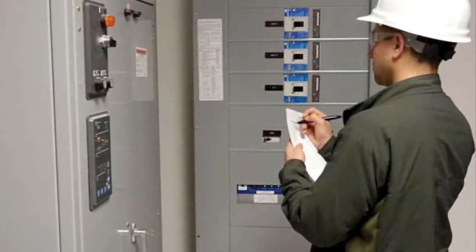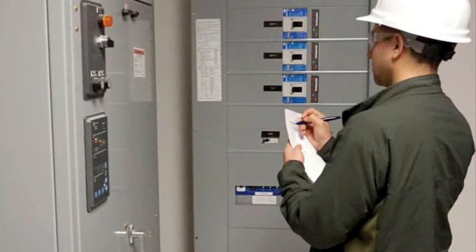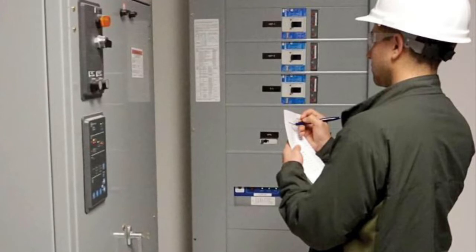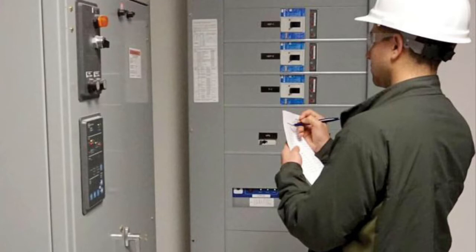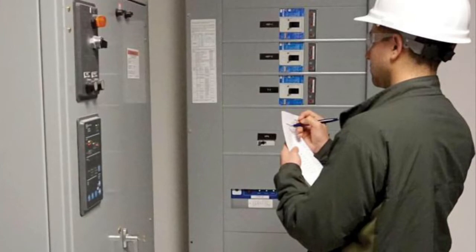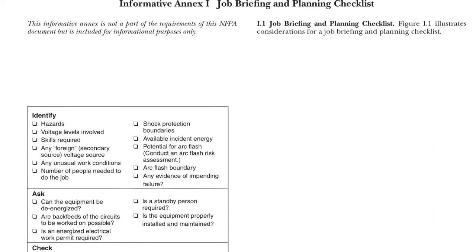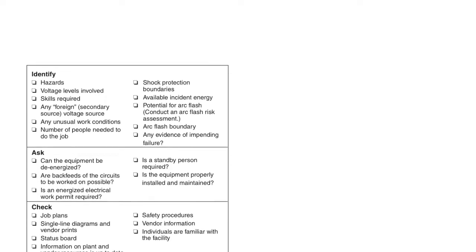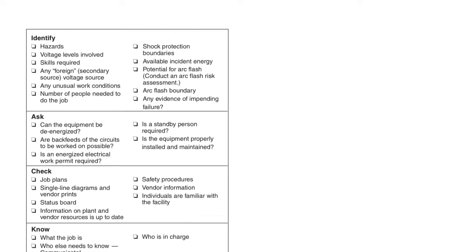Before starting each job that involves exposure to electrical hazards, the employee in charge shall complete a job safety plan and conduct a job briefing with the employees involved. The job safety plan shall be completed by a qualified person, be documented, include a description of the job and individual tasks, identification of electrical hazards associated with each task, and a shock risk assessment. The shock risk assessment must identify shock hazards, estimate the likelihood and severity of injury, and determine if additional protective measures including PPE are required. The job briefing shall cover the job safety plan and information on the energized electrical work permit if required. The job briefing and planning checklist is located in Informative Annex I of the NFPA 70E and in the safety reference job on Procore.